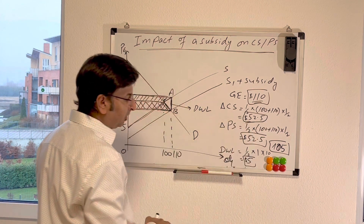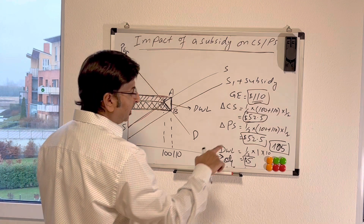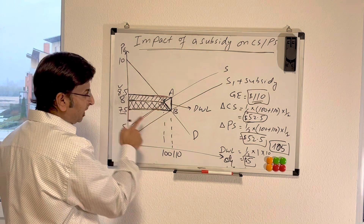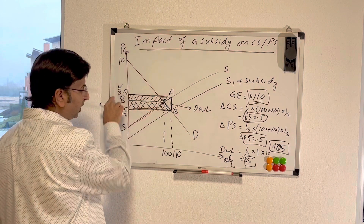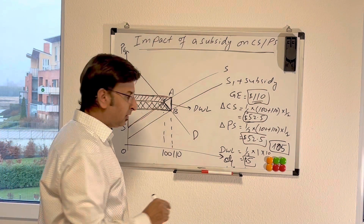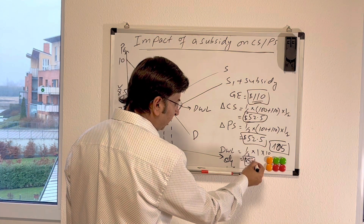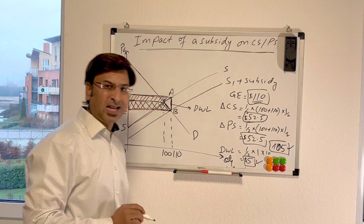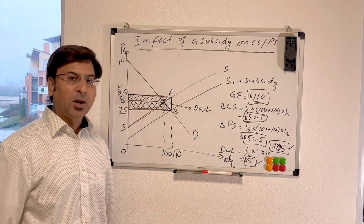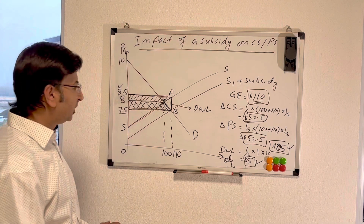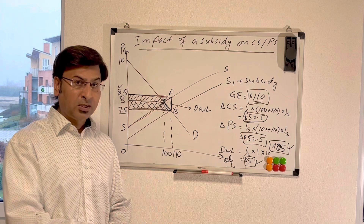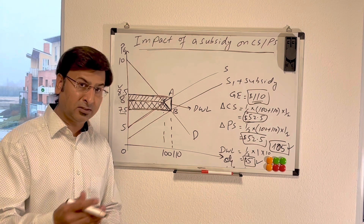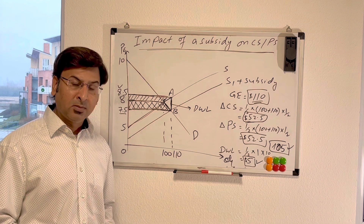This missing area — the dead weight welfare loss — equals 5. You can calculate the area of this triangle as half times the height (1) times the base (10), which equals 5. When you add 5 and 105 together you get 110, confirming the total government spending. This is how you show the impact of subsidies on consumer and producer surplus and how a subsidy can cause dead weight welfare loss — which in the real world represents efficiency loss, as the subsidy causes producers to become less efficient.